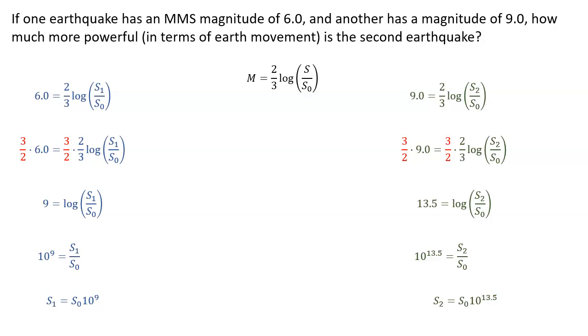Okay, so this is more earth movement, of course, than the first earthquake. So to compare the two, we're going to look at the ratio of s2 to s1. This will tell us how many times more powerful the second earthquake was than the first.